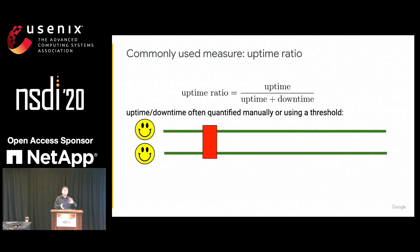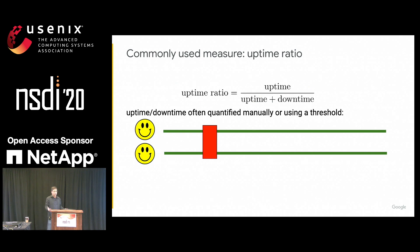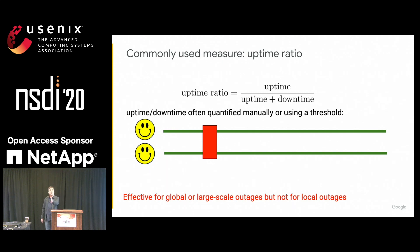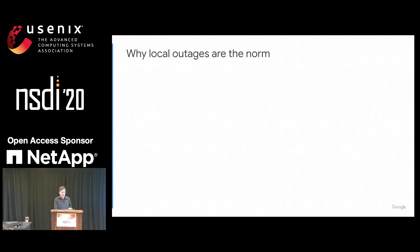The problem with both the manual approach and the threshold is that it's not proportional. If it's a threshold, you just go over the threshold and get a drastically different outcome. This approach works well for global outages — if the system is completely down you can say it died at 9 a.m. and came back at 9:30. But that is almost never the case. Local outages are the common case, not global outages.